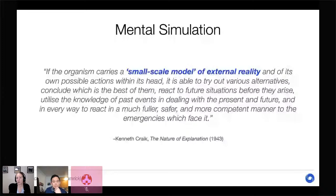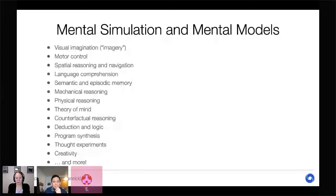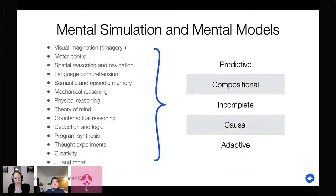Over many decades, psychologists and neuroscientists have found evidence for mental simulation across a vast range of cognitive domains — from relatively low-level processes like motor control and spatial reasoning to very high-level abilities like thought experiments and creativity. Looking across all of these phenomena, a few themes emerge: mental simulation is predictive, compositional, causal, incomplete, and adaptive.